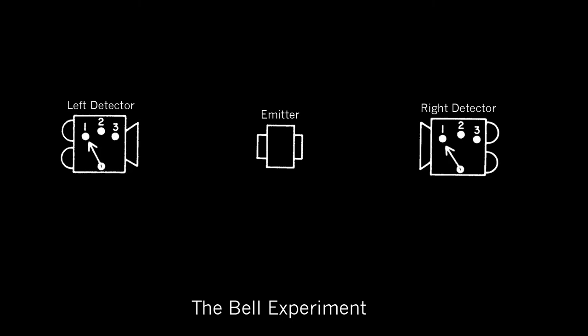Here's the idea of the setup. You have a machine in the middle that sends particles out with a button on it, and when you press it, a particle goes to the left and a particle goes to the right. Then you have two detectors, and the detectors have an indicator that you can set to either one, two, or three on one side, and one, two, or three on the other. You can set any combination of those.